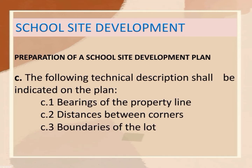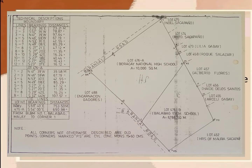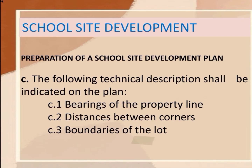The following technical descriptions shall be indicated on the plan. Technical descriptions is a tool that provides users information about the features of property. These are the bearings of property lines, distances between corners, and boundaries of the lot.